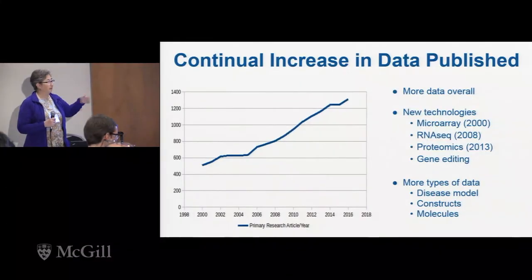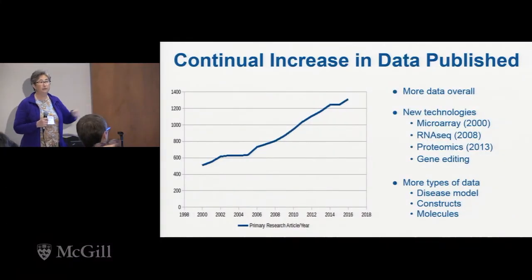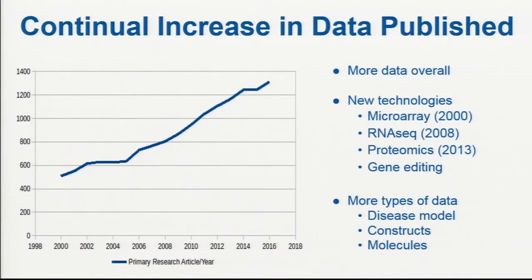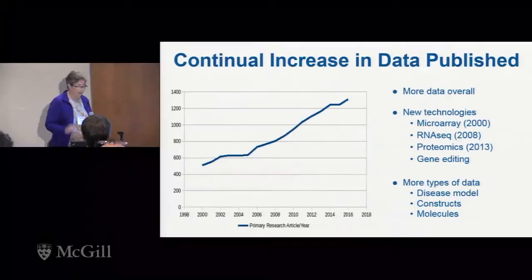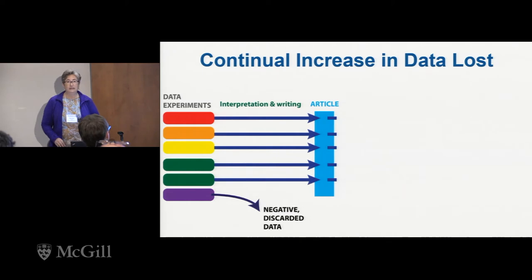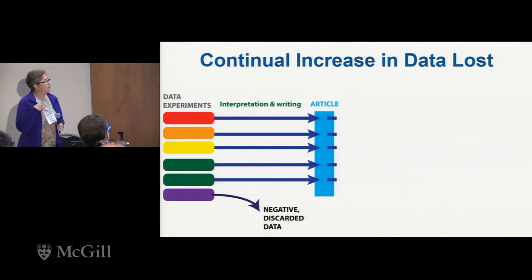We cannot keep up with the amount of publications that are coming out per year. This is just for the C. elegans field alone — WormBase focuses on the nematode C. elegans. It's a piddly amount of papers compared to other organisms like the mouse and rat field, but it's still too much for curators to handle. So not all of the data that gets published can make it into our database. That's one problem.